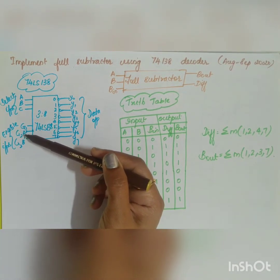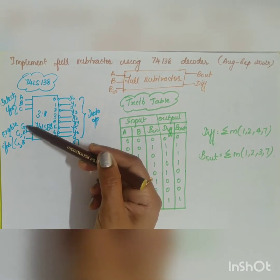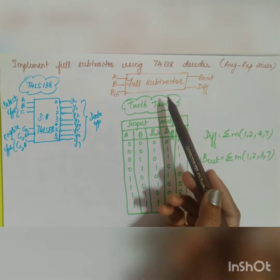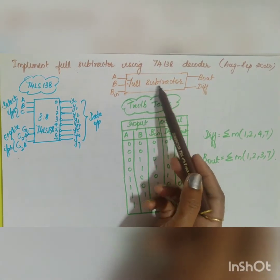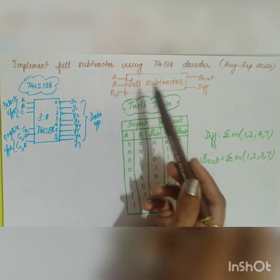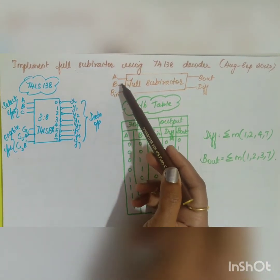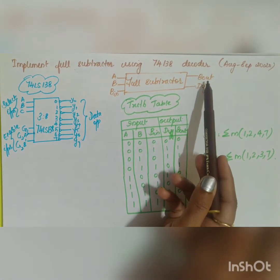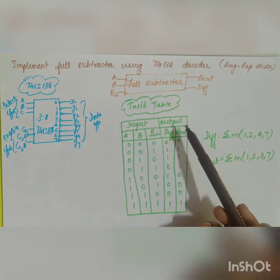The enable inputs are G2A-bar and G2B-bar, which are both active low, and G1, which is active high. The full subtractor has three inputs: A, B, and Borrow-in, and two outputs: Borrow-out and Difference.